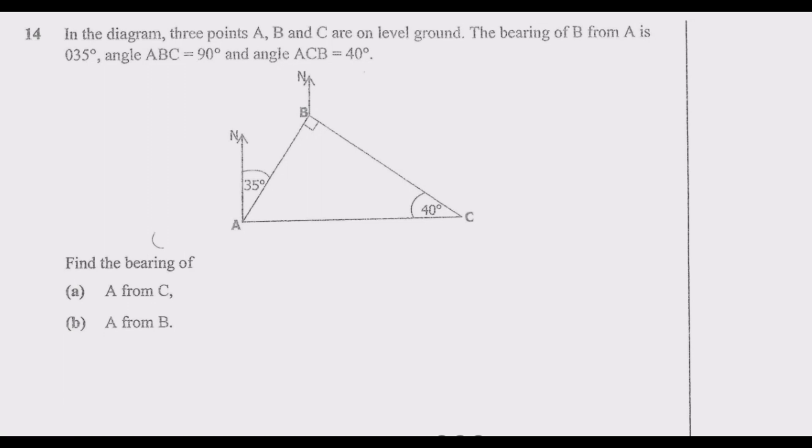So it's A from C, so we need to come to C and draw a north line because it's A from C. We are standing from point C, then we turn all the way up to where we have the point. So we come here and draw the north, and we turn. This is the principle that we use.